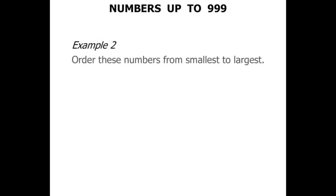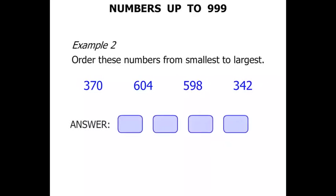Terrific! Example 2 now. We need to order these numbers from smallest to largest. We have 370, 604, 598 and then 342. So our answer there, we are going from smallest to largest.